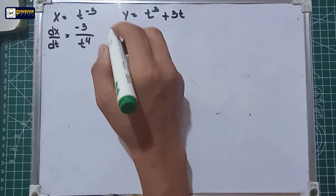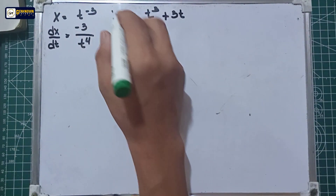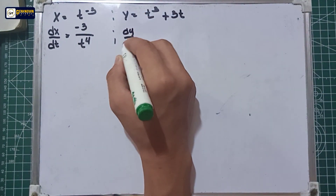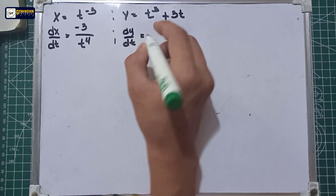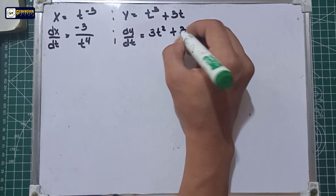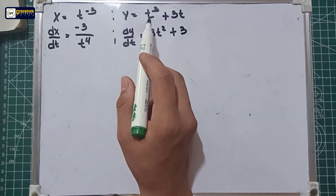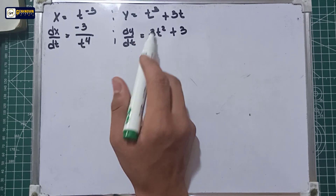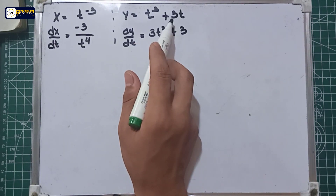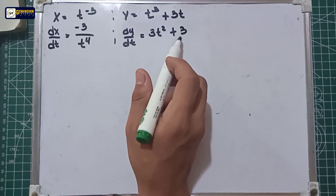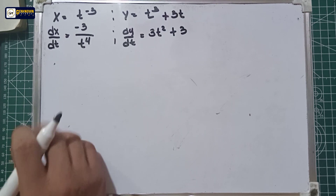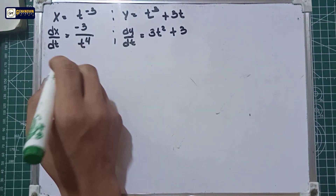For the y function, dy/dt is equal to 3t squared plus 3. The derivative of t cubed is 3t squared, and the derivative of 3t is equal to 3.